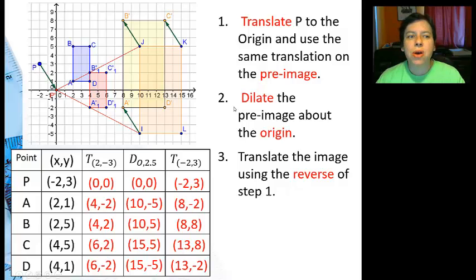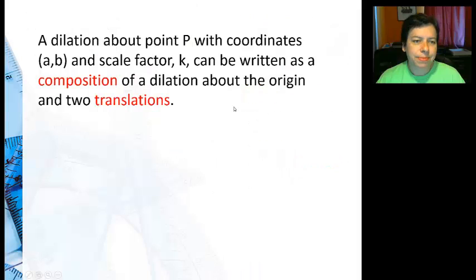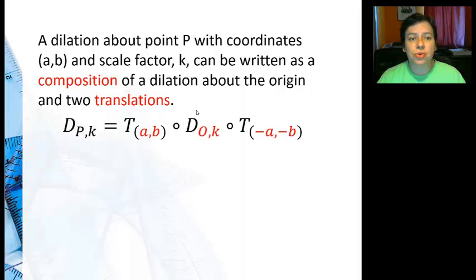And then pretty soon you'll probably see that's how it's always working. So again, a dilation about point P with coordinates (a,b) and scale factor k can be written as a composition of a dilation about the origin and two translations.